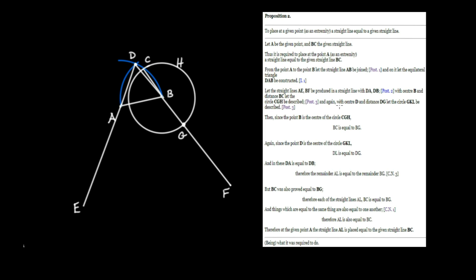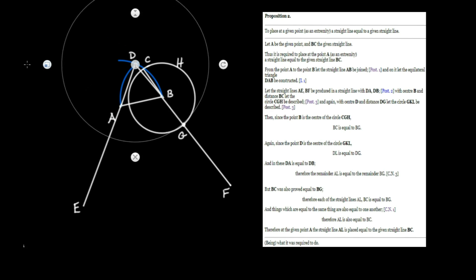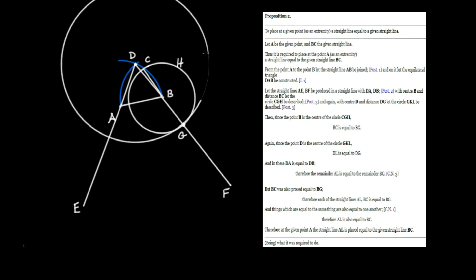Now we produce another circle with center D and distance DG. We go over to that point on the equilateral triangle, use it as a center, and draw all the way over to this intersection point. We call this new intersection point L, and also K — so that's circle GKL. That completes the construction phase of the proposition.